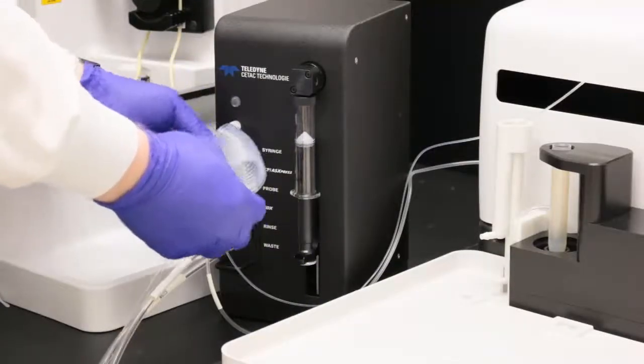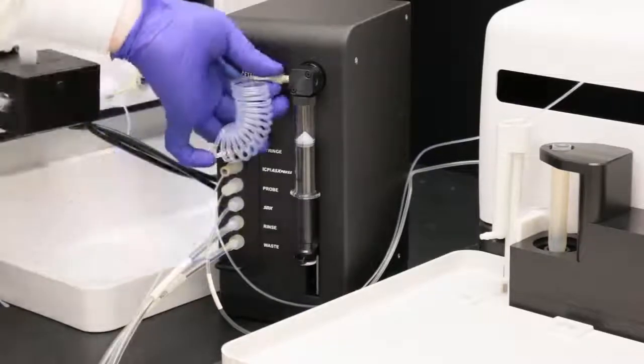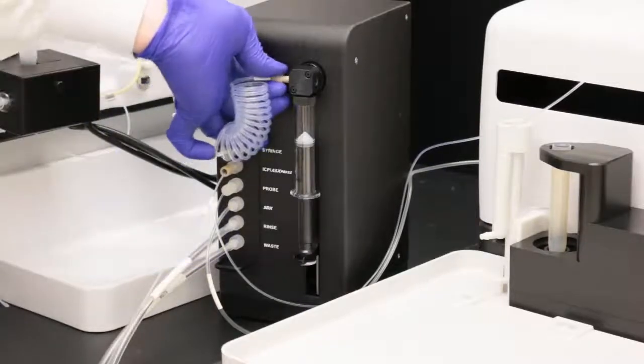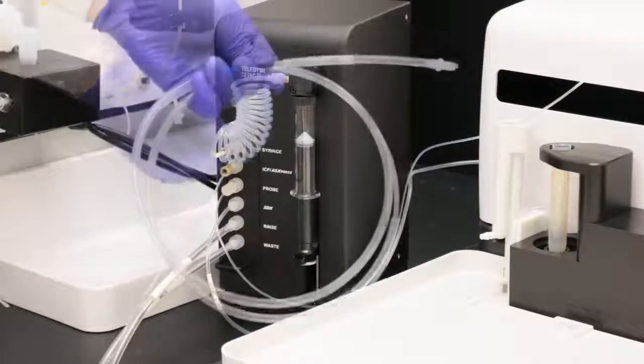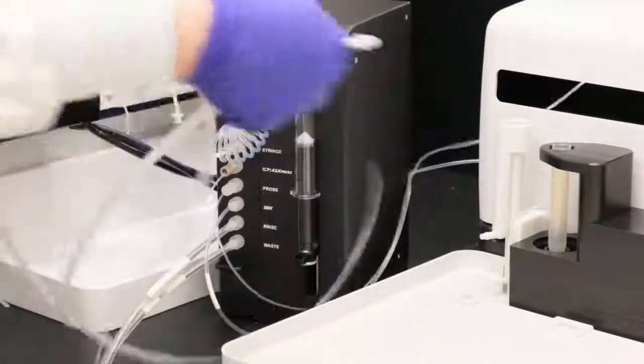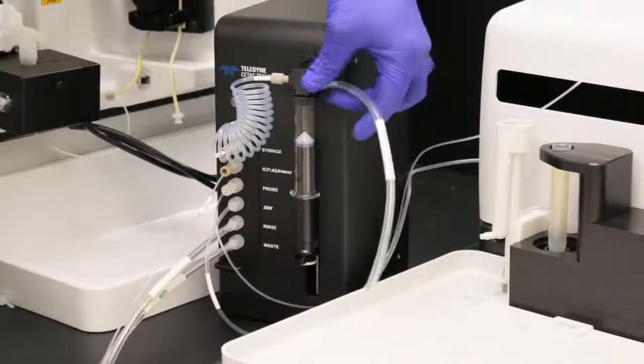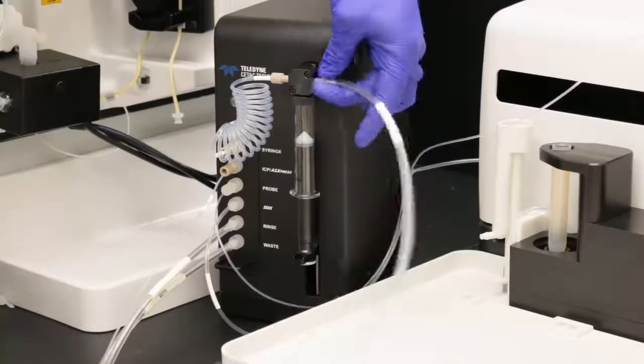Connect one end of the sample loop to the syringe connector and the other end to the left side of the valve. Connect the syringe diluent tube to the right side of the valve. Place the other end of the syringe diluent tube into the bottle of diluent.